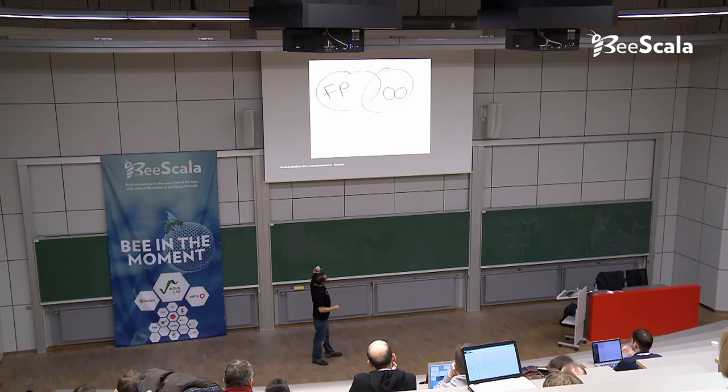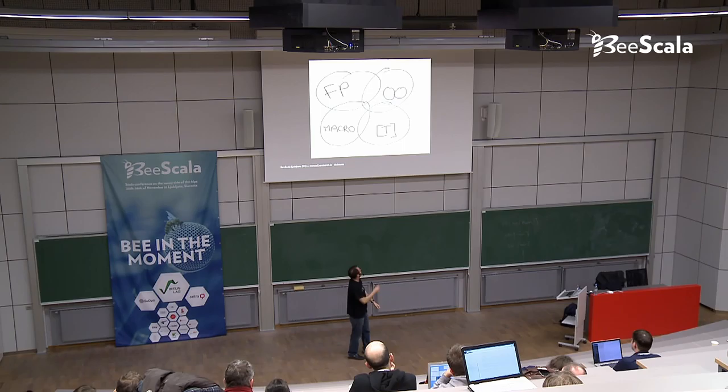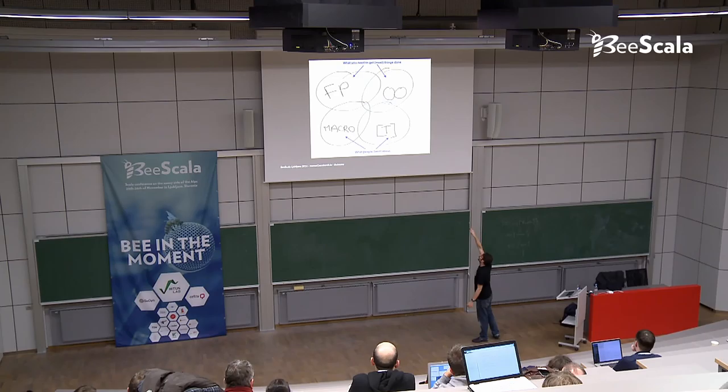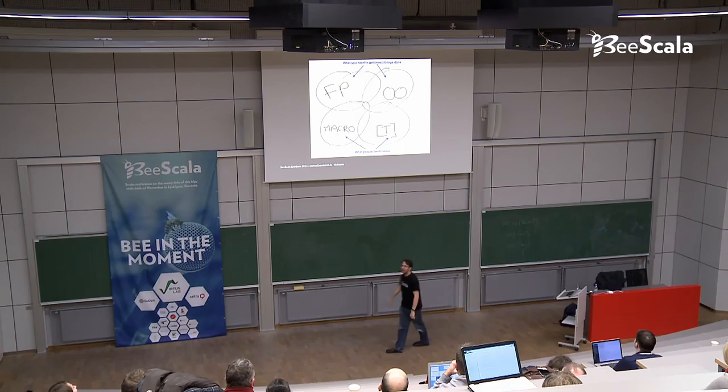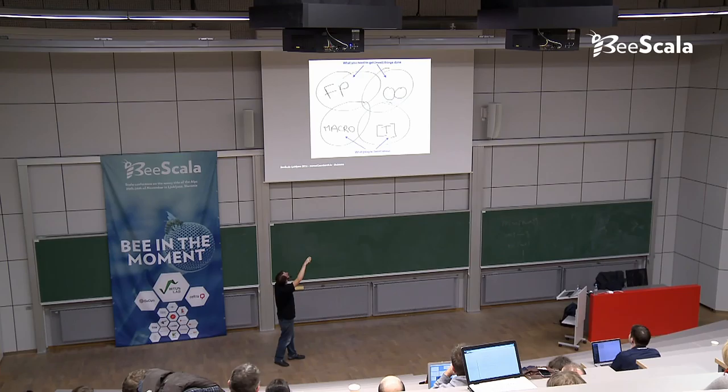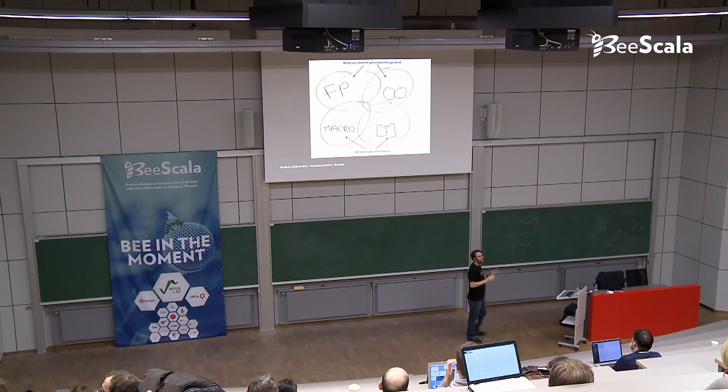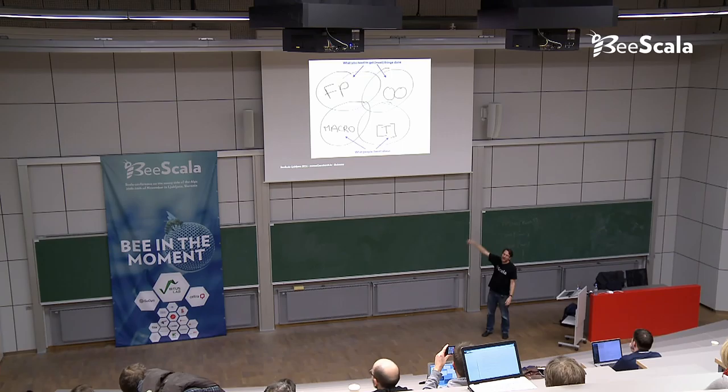We have macros and then this strange thing called T, and that's type or type annotation or type level programming. Now, why do I show this? Well, because what you need if you want to write a program is this stuff. What you hear about on Twitter and reading blogs is this stuff. Right? I mean, come on. That's true, right? We only ever see this. Nobody talks about functional or object-oriented programming. No, nobody talks about this.